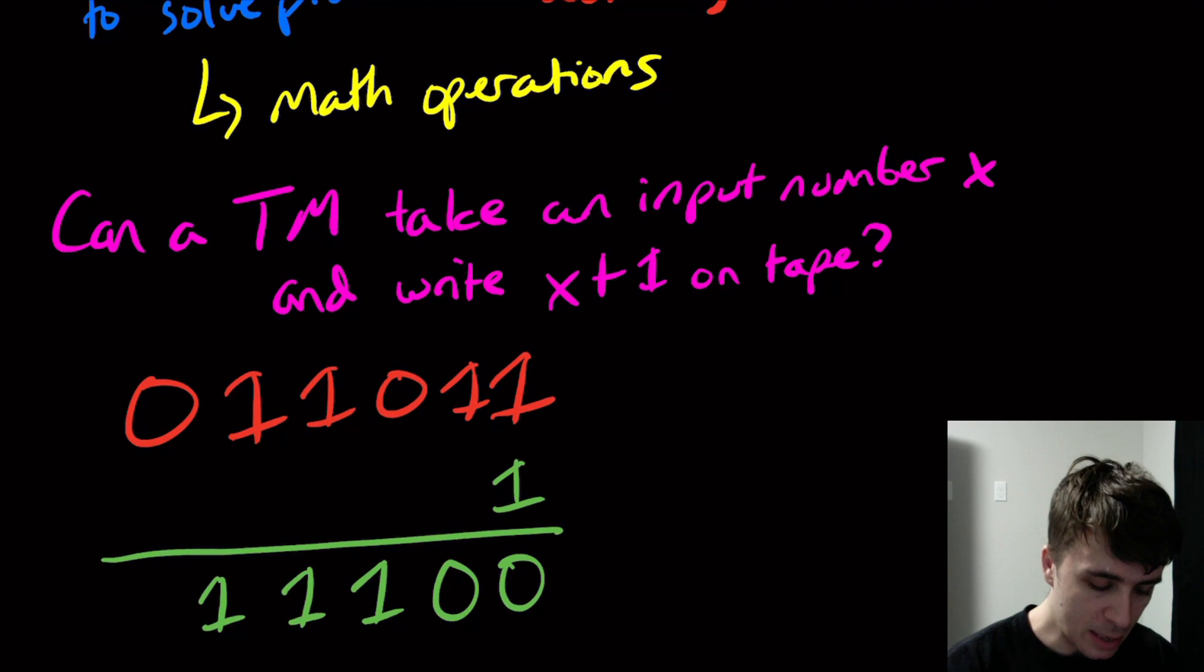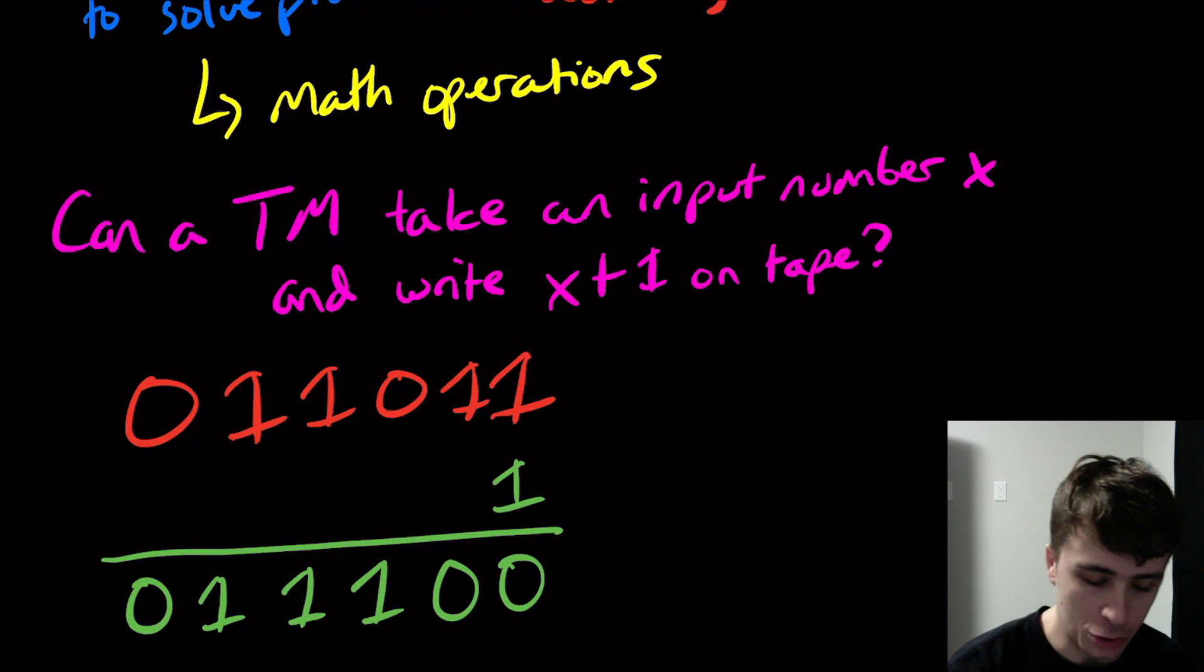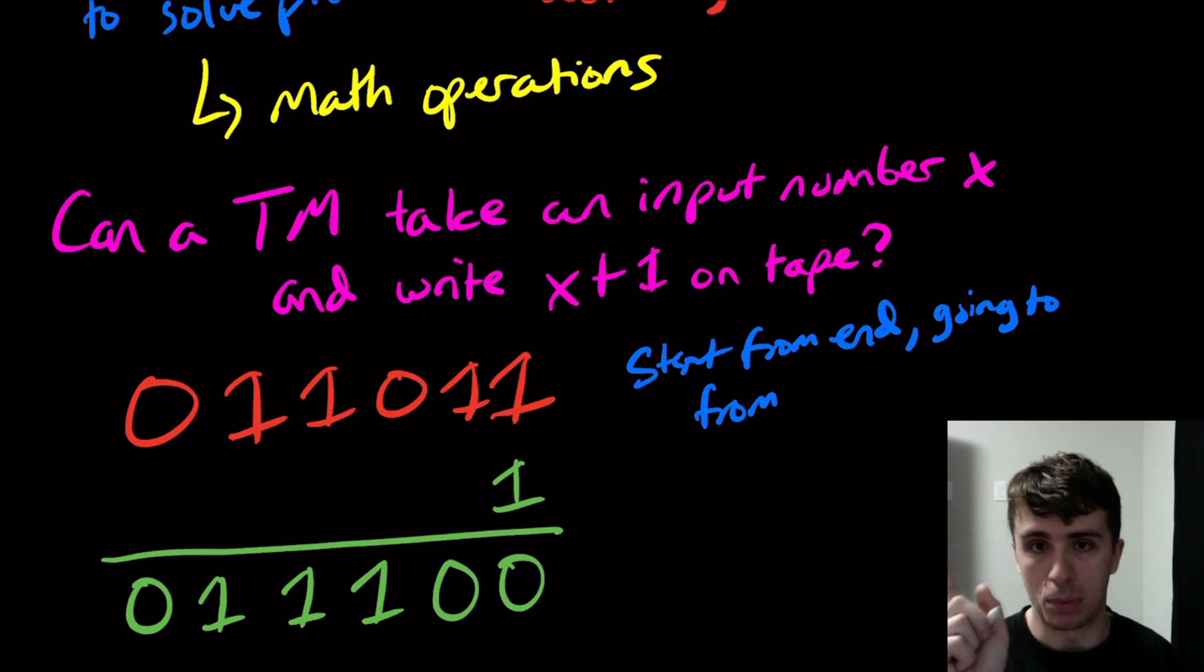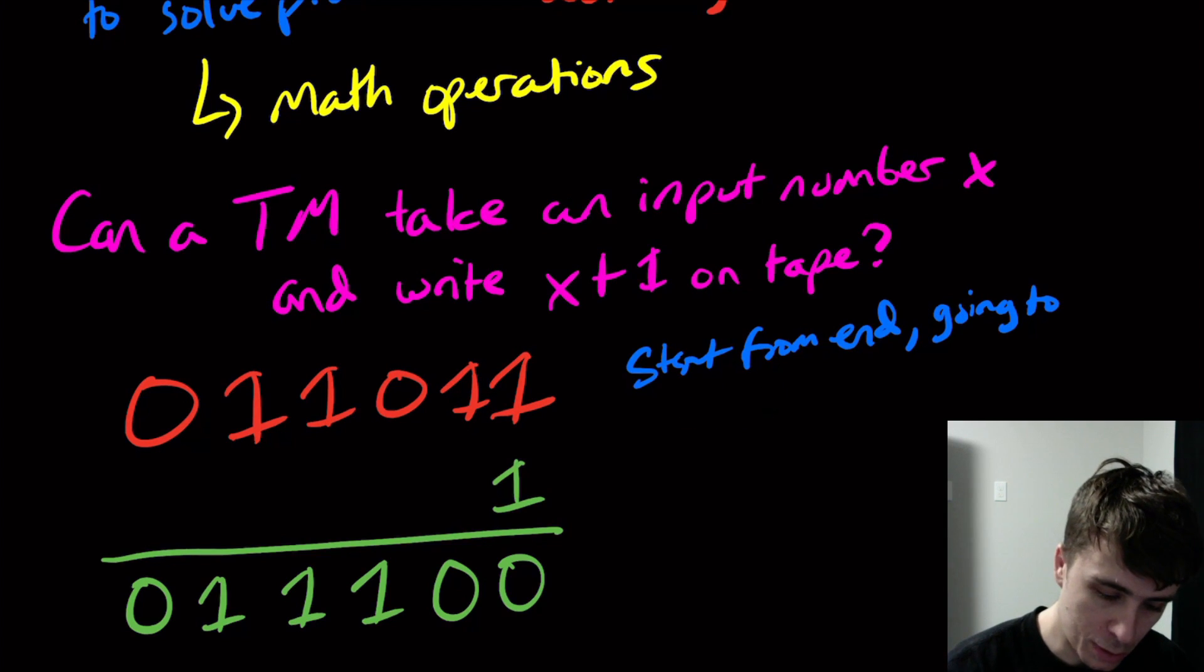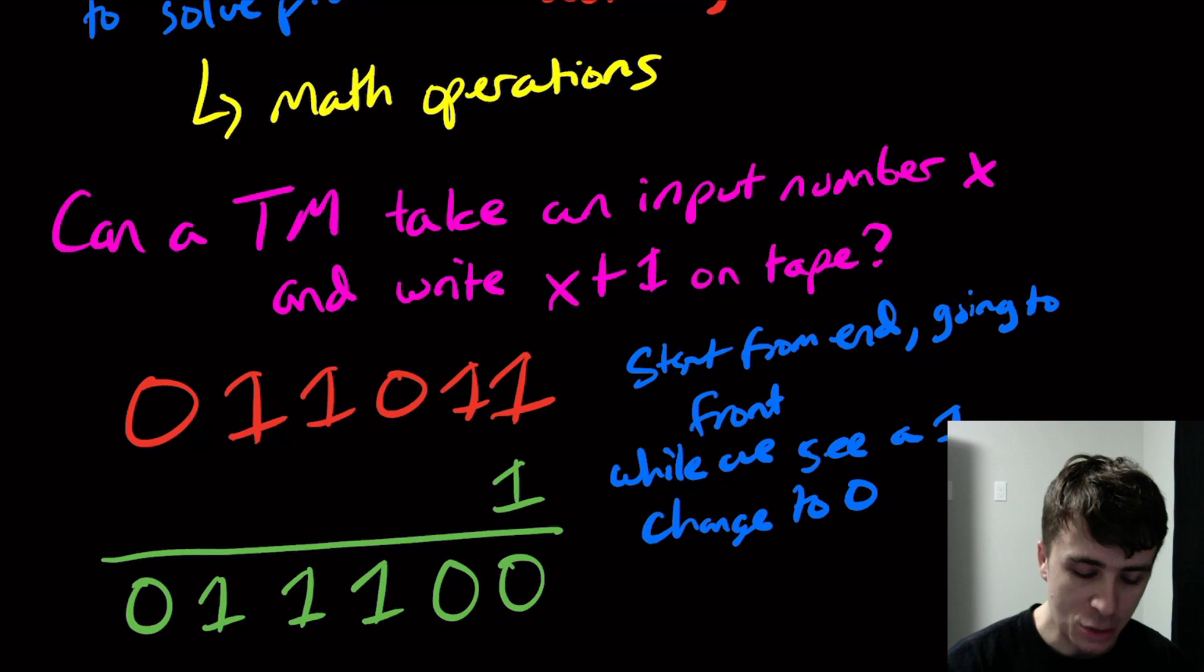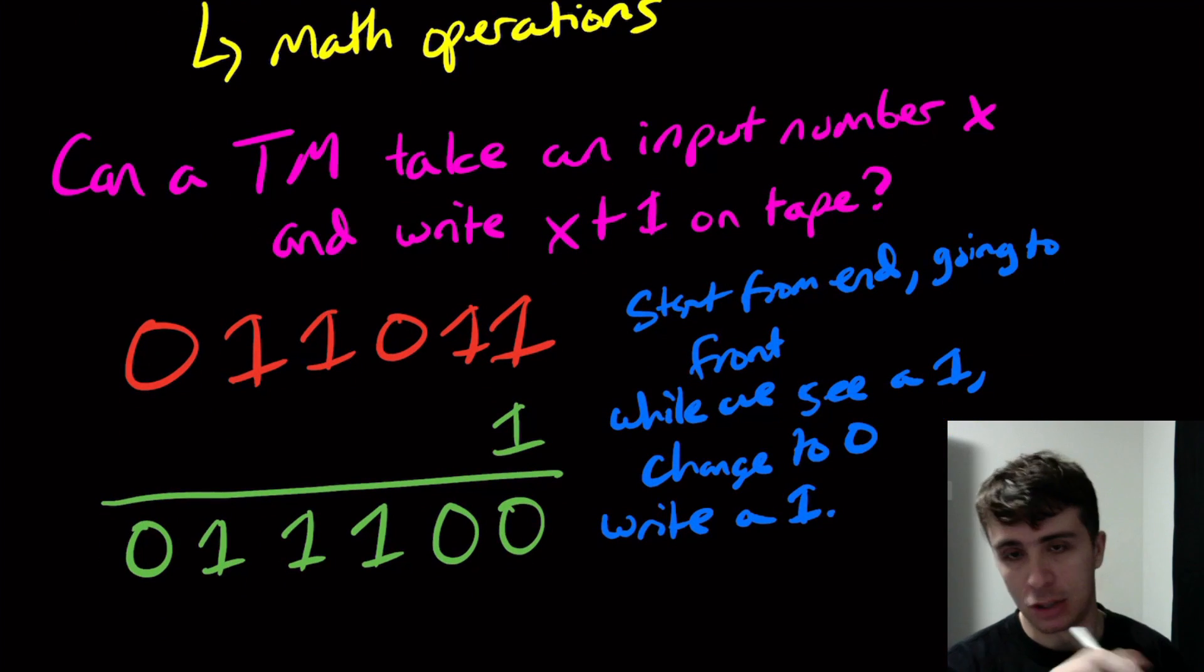Because there's no carry, we're going to have the rest of the number just copied. So the real way of doing this is to start from the end, from the right side of the number to the left. While we see a 1, change it to a 0.